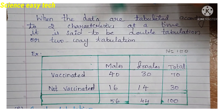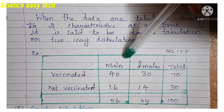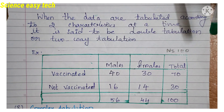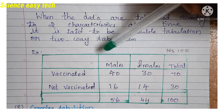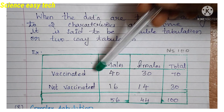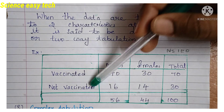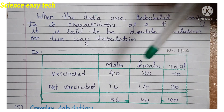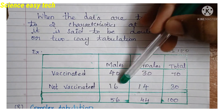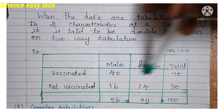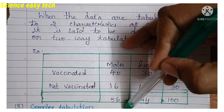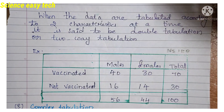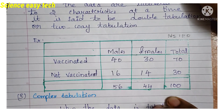For example in double tabulation, the two characteristics are vaccination status and sex. N equals 100. Males vaccinated: 40; females vaccinated: 30. Males not vaccinated: 16; females not vaccinated: 14. Row totals: 40 plus 30 equals 70 vaccinated; 16 plus 14 equals 30 not vaccinated. Column totals: 40 plus 16 equals 56 males; 30 plus 14 equals 44 females. Grand total is 100. This is an example of double tabulation.